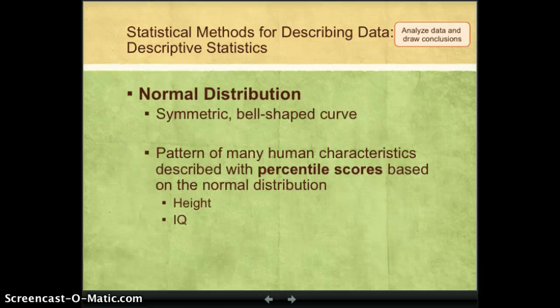So that symmetrical bell-shaped curve has another name. It's called the normal distribution. And what we have found with lots of research on human characteristics is that a lot of them have this symmetrical bell-shaped curve with these fairly standard deviations. And so we call this the normal distribution. Sometimes it's called the normal curve.